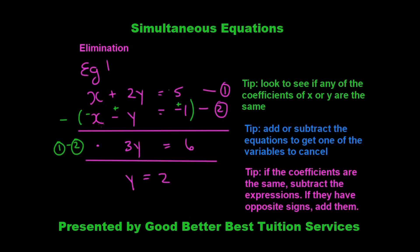Because both x coefficients are positive, we need to subtract the expressions. That minus is in front of the entire second expression, so all the signs inside change: positive becomes negative and negative becomes positive. So 5 plus 1 is 6, 2y plus y is 3y, and x minus x cancels to 0. This gives us 3y equals 6, and therefore y equals 2.